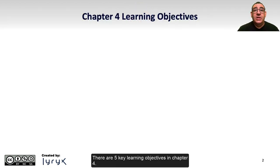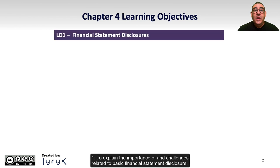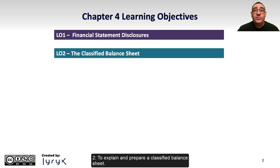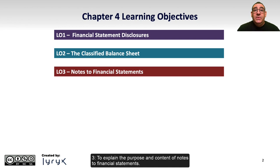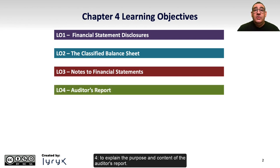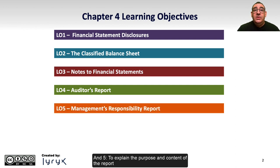There are five key learning objectives in Chapter 4: 1. To explain the importance of and challenges related to basic financial statement disclosure. 2. To explain and prepare a classified balance sheet. 3. To explain the purpose and content of notes to financial statements. 4. To explain the purpose and content of the auditor's report. And 5. To explain the purpose and content of the report that describes management's responsibility for financial statements.